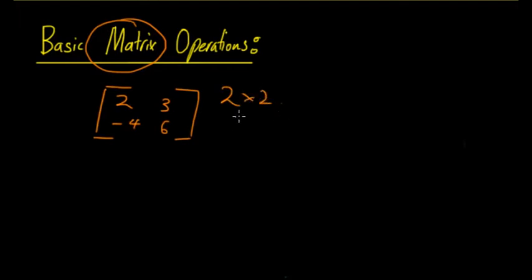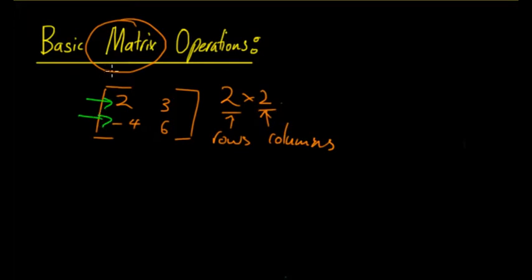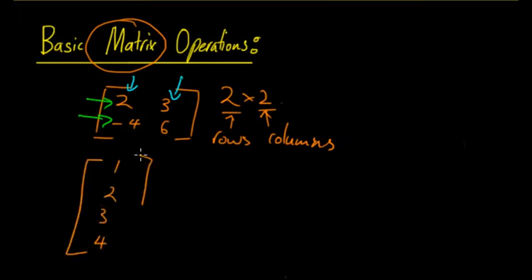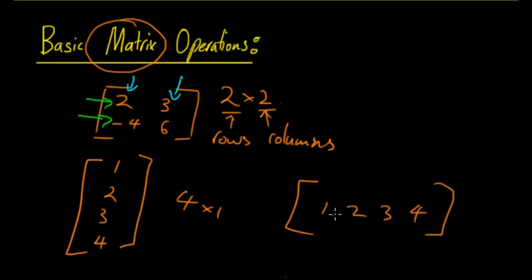Matrices are defined by their rows and columns. This one is called a 2 by 2 matrix because it has two rows and two columns. For example, the first row, first column entry is 2, and the first row, second column entry is 3. You can have different types of matrices — such as a four by one with entries 2, 3, 4, or a one by four matrix like 1, 2, 3, 4.